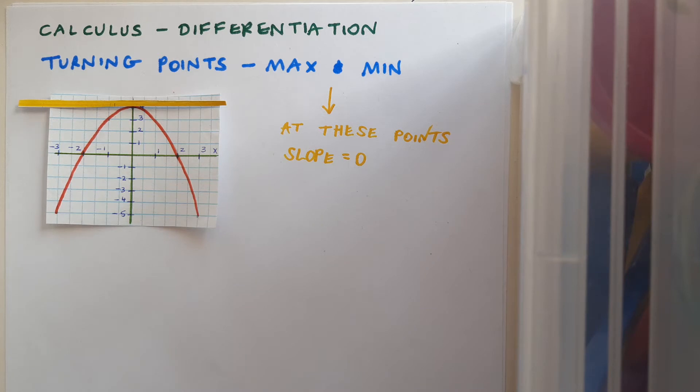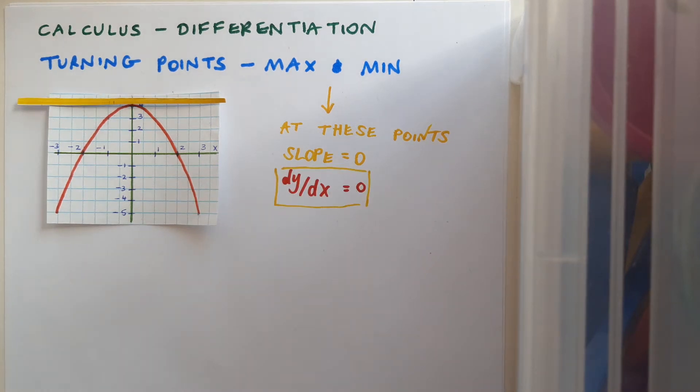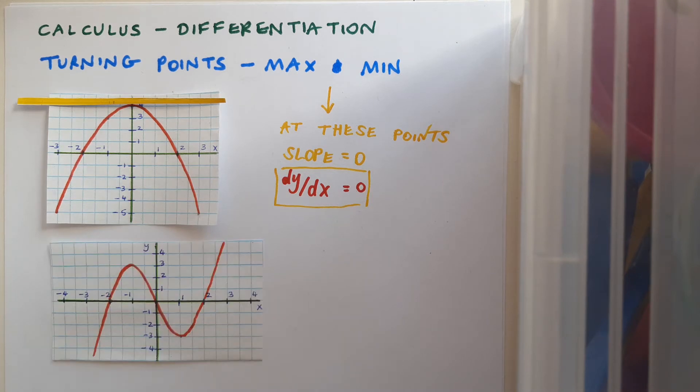And we know another way to say slope of the tangent: the slope of the tangent is just dy/dx. And so we can use this piece of information to figure out exactly where this max and min point might be. Some functions have more than one turning point. For example, this cubic has a maximum point and a minimum point.